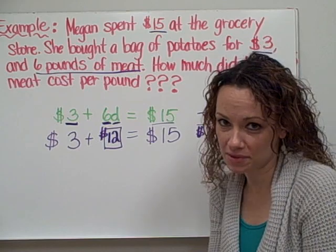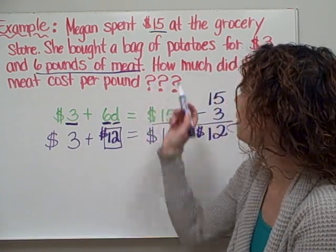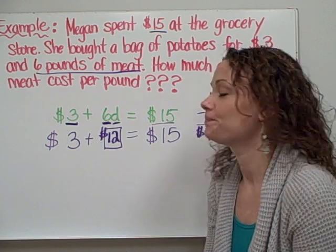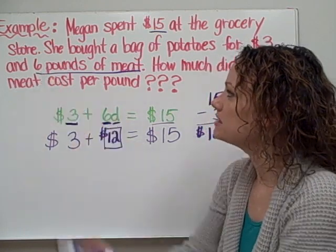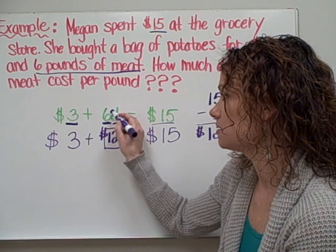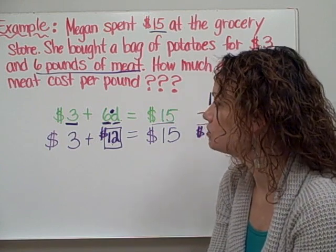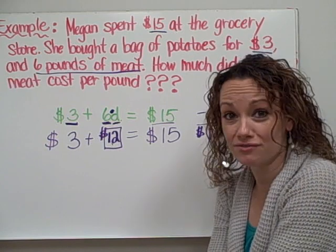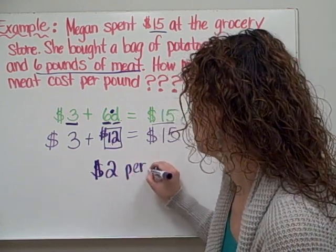However, I'm not quite done yet — and this is often where students make mistakes. They come up with one answer and think they've answered the final question. But the question is: how much did the meat cost per pound — not altogether. Although the meat cost $12 total, that's not the per-pound price. Megan bought 6 pounds, so 6 times something must equal $12. I ask myself: 6 times what gives me $12? The answer is 2 — $2 per pound for meat.